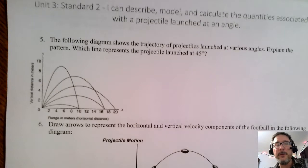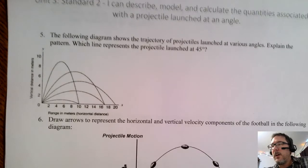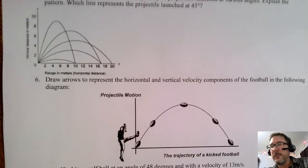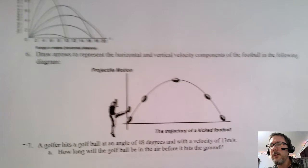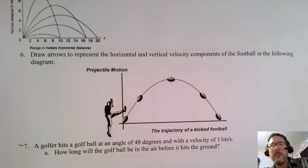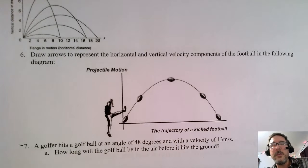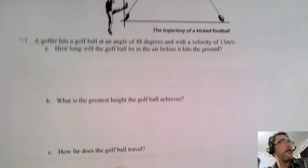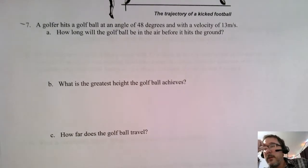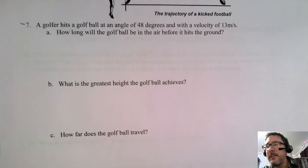The football problem goes back to day one: horizontal velocity stays the same at every point in the path, while vertical velocity changes. Now I want to do question seven — a golfer hits a ball at an angle of 48 degrees with a velocity of 13 meters per second. It breaks down the parts, and again we're trying to find time first. Let me list my variables. I'll draw a picture first since I neglected to do that.